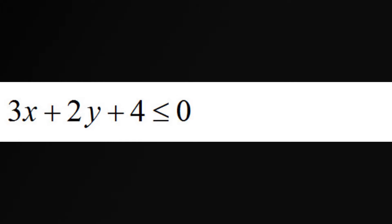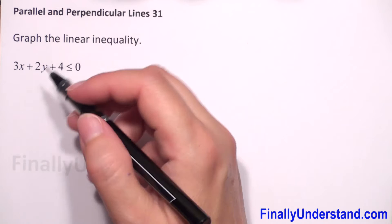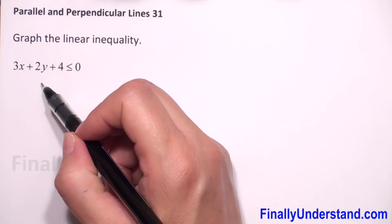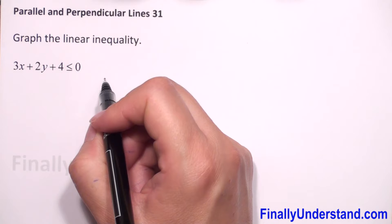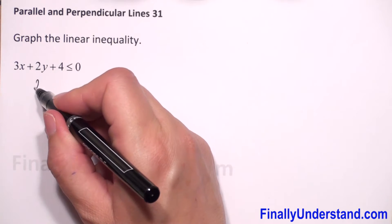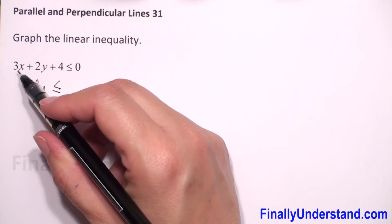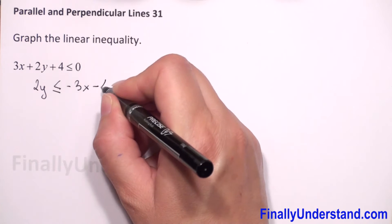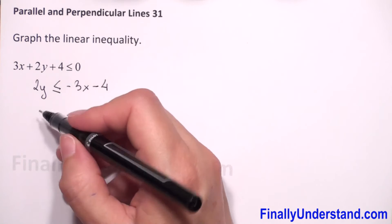We have to graph the linear inequality. First, we will rewrite the inequality in slope-intercept form, so we have to find y from this inequality and put y on the left side and the rest on the right side. So we have 2y is less than or equal, and I will move 3x to the right, so it will be negative 3x and negative 4.